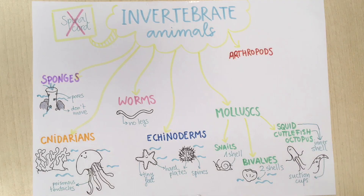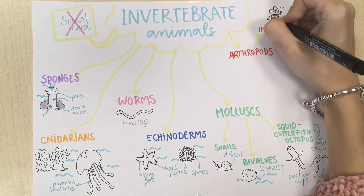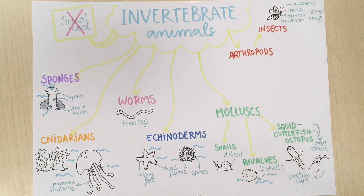The last group is arthropods. Arthropods are divided into four smaller groups. Insects have a body divided into head, thorax and abdomen. They have two antennae in the head and six legs and wings in the thorax. Insects metamorphose. That means that they are born as larvae. To become adults they form a chrysalid and after some time they come out as the adult insect.